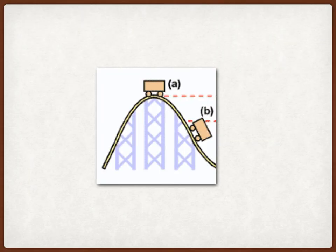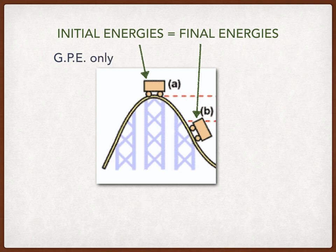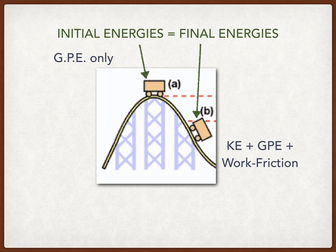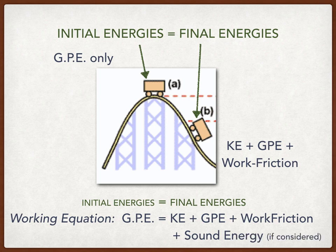Let's analyze this diagram of a cart moving on a roller coaster path. Initial energy equals final energy. For the initial state, we have gravitational potential energy only since the cart is not yet moving. For point B, since there is still height, we consider gravitational potential energy. Therefore, the final energy is kinetic energy plus gravitational potential energy plus work due to friction. We could also add sound energy. The working equation is: gravitational PE initial equals kinetic energy plus gravitational PE final plus work due to friction plus sound energy, if considered.